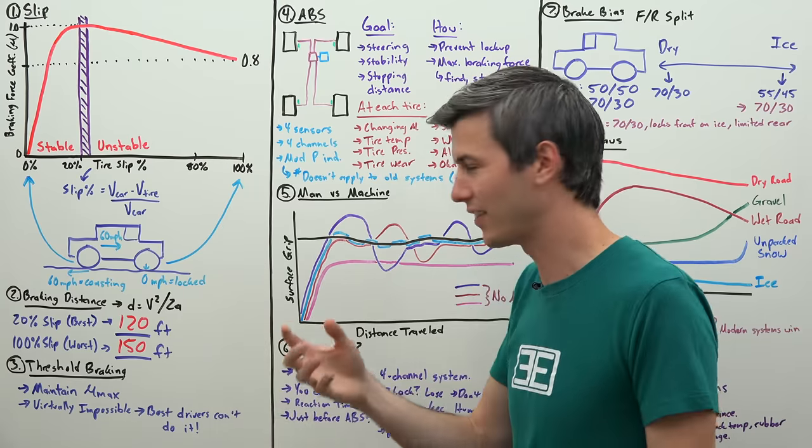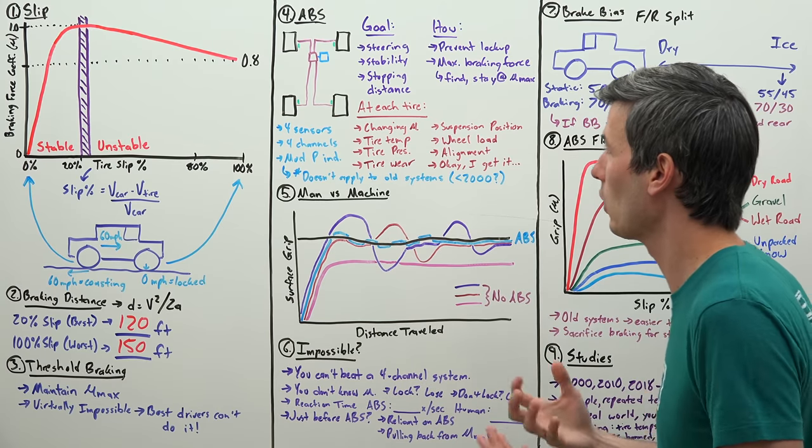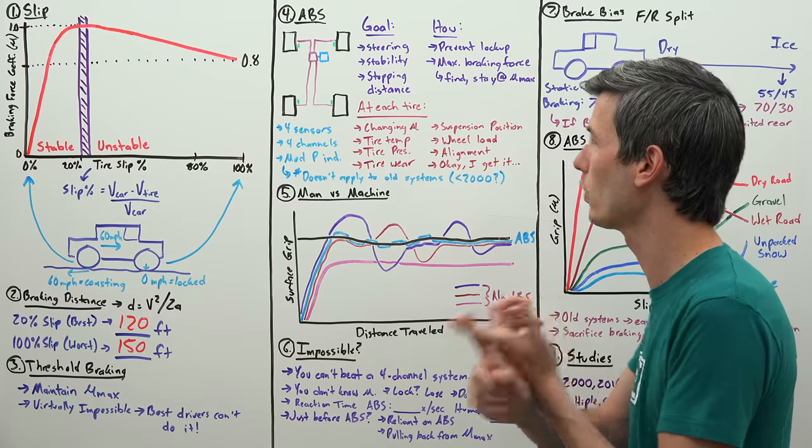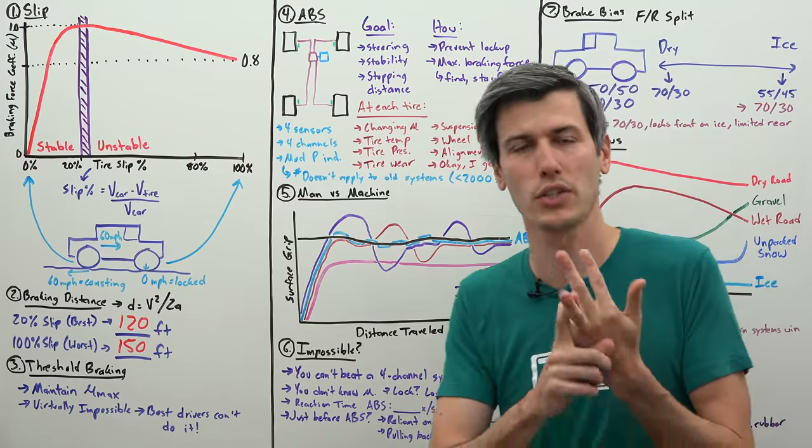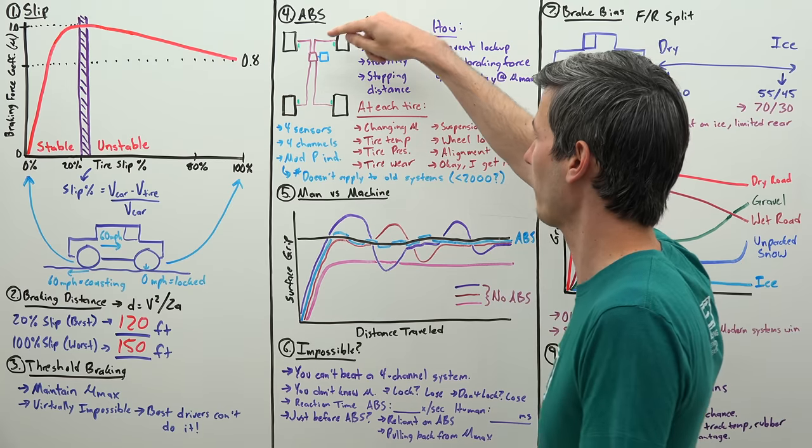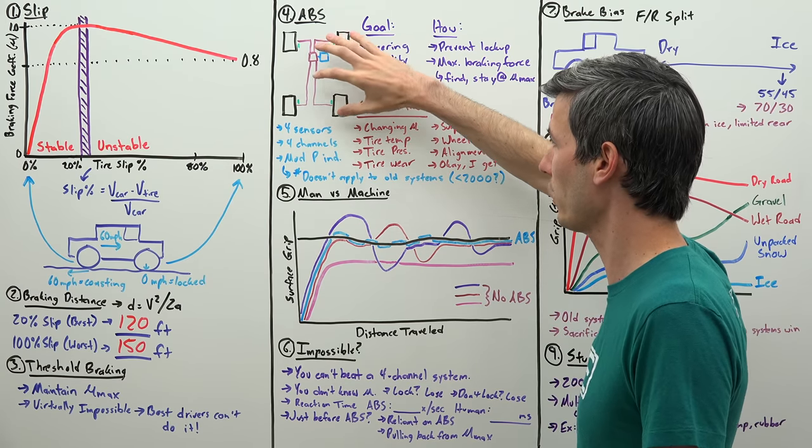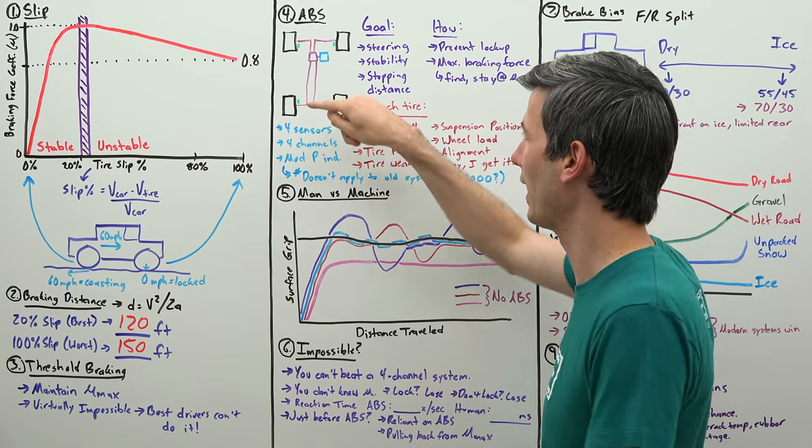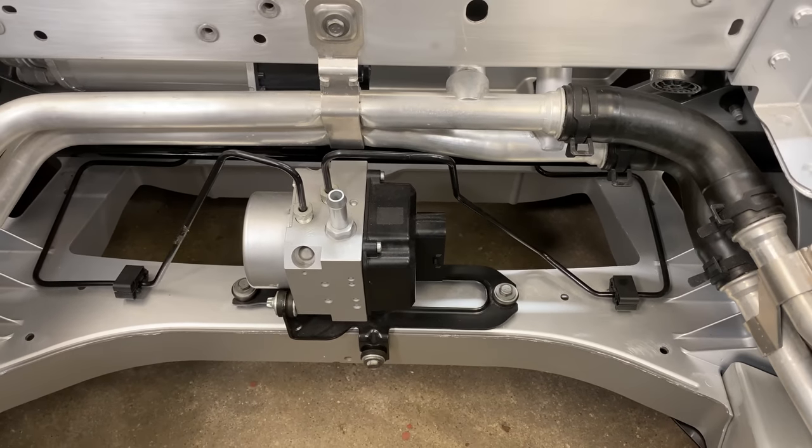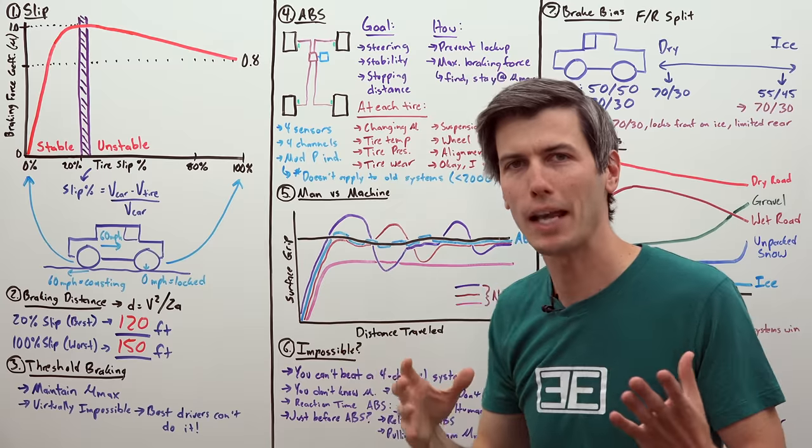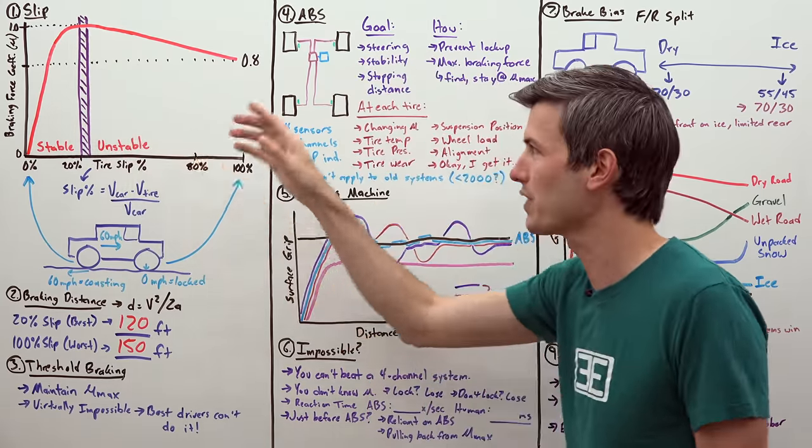So what ABS does is it takes everybody out there and it brings them to near perfect numbers. What is the goal of ABS? The goal of ABS is to continue to allow you to have steering, to provide you with stability and to decrease your stopping distance. So it does this. You have sensors at every single wheel, modern ABS systems. You'll have four wheel sensors. You'll have four separate channels. And so you can modulate your brake pressure at each individual tire based on the input from that wheel sensor and knowing what its speed is relative to your vehicle speed. So what ABS is doing is attempting to maintain your tire slip in that perfect little range so that you have the perfect stopping distance.